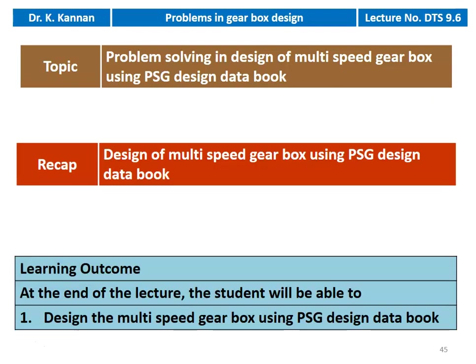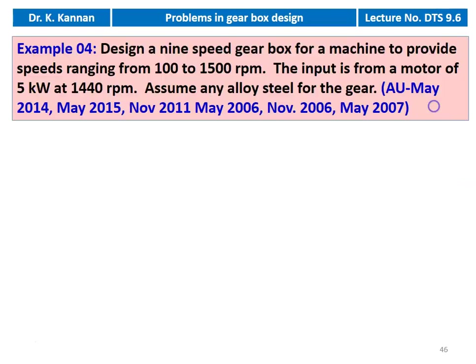This is lecture number 9.6. We are going to solve a problem in the design of multi-speed gearbox using the PSG Design Data Book. In the earlier lecture, we solved a problem on the 9-speed gearbox. In this lecture also, we solve one more problem on a 9-speed gearbox. Example number 4: Design a 9-speed gearbox for a machine to provide speed ranging from 100 to 1500 RPM. The input is from a motor of 5 kW and 1440 RPM. Assume alloy steel for the gear. This question appeared in May 2014, May 2015, November 2011, May 2006, November 2006, and May 2007.